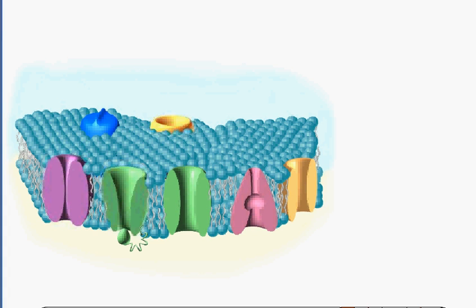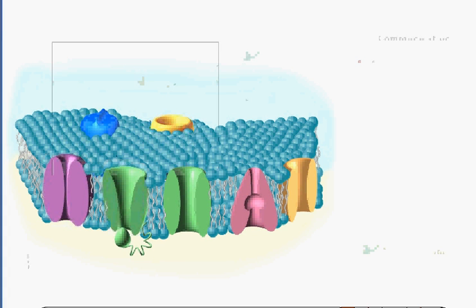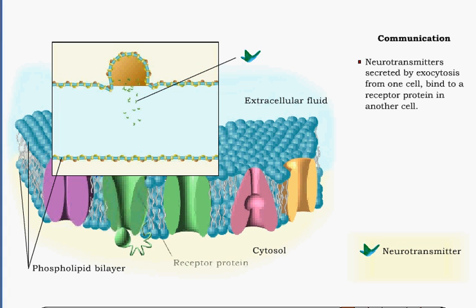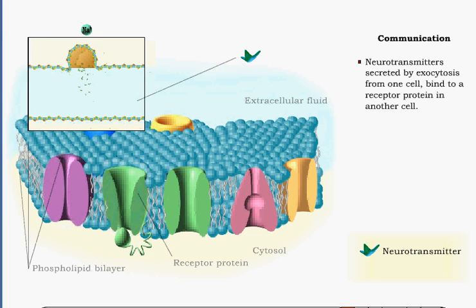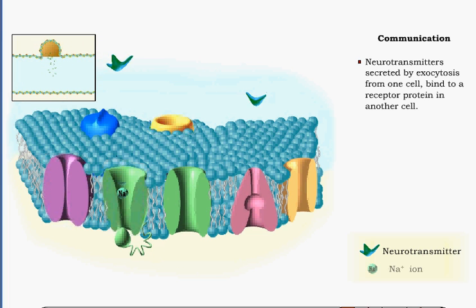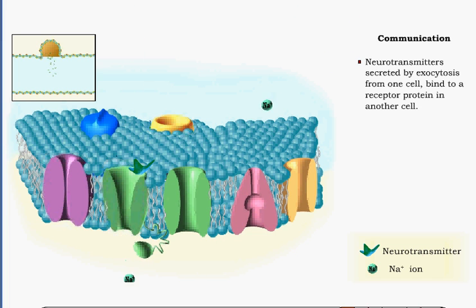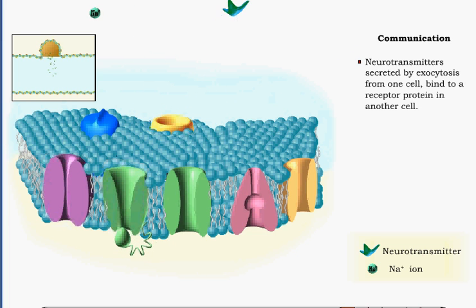Some membrane proteins act as receptors to molecules secreted from other cells, a form of cellular communication. An example is a membrane receptor that, once bound to a neurotransmitter, promotes the flow of ions through the membrane, thereby triggering changes in cell function.